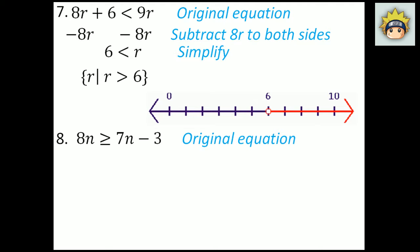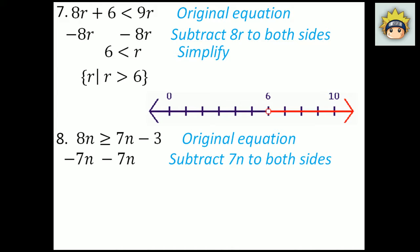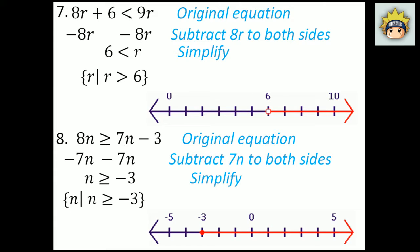Number 8. The original equation is 8n is greater than or equal to 7n minus 3. I'm going to move the smallest variable term — subtract 7n from both sides. After subtracting 7n from both sides, I get n is greater than or equal to negative 3. In set builder notation: n, n is greater than or equal to negative 3. It's a closed dot on negative 3 going all the way to the right because n is greater than or equal to negative 3. So negative 2, negative 1, 0 and so forth would all be valid.